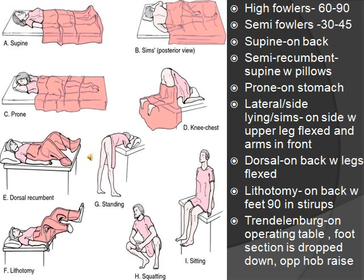Dorsal recumbent is on the back with the knees flexed on the bed — used for GYN procedures or inserting a urinary catheter. Lithotomy is on the back with feet at 90 degrees in stirrups, used during labor or GYN appointments. Trendelenburg is used in the operating room where the feet are raised instead of the head — used for shock or pelvic and rectal exams.